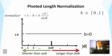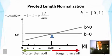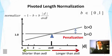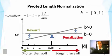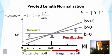If we set B to a non-zero value, then the normalizer value would be higher for documents that are longer than the average document length, whereas the value would be smaller for shorter documents. So there is a penalization for long documents and a reward for short documents. The degree of penalization is controlled by B — if we set B to a larger value, there is even more penalization for long documents and more reward for short documents. By adjusting B, which varies from zero to one, we can control the degree of length normalization.